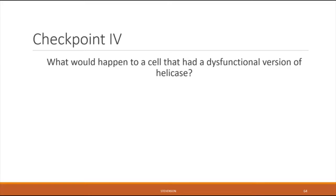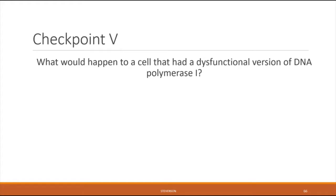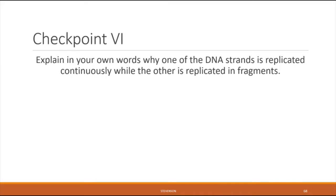To finish this lecture, here are a few checkpoints to test your knowledge. First, tell me what would happen to a cell that had a dysfunctional version of the enzyme helicase. Second, tell me what would happen to a cell that had a dysfunctional version of the enzyme DNA polymerase 1. And finally, explain in your own words why one of the DNA strands is replicated continuously while the other one is replicated in fragments.